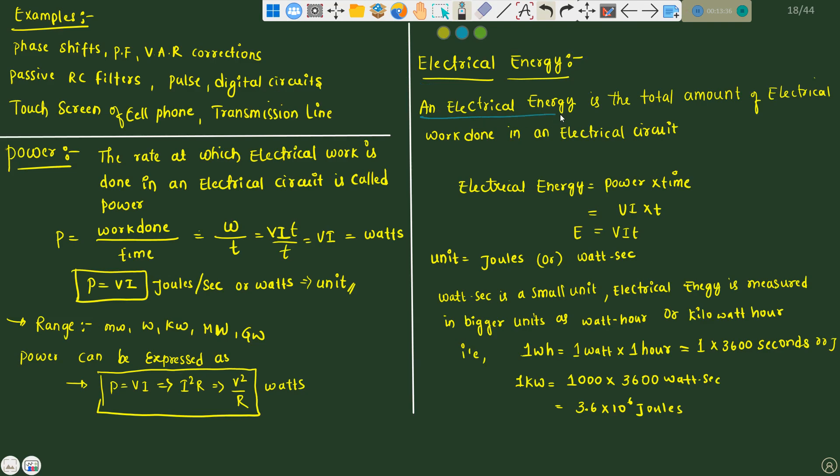If we talk about electrical energy, electrical energy is the total amount of electrical work done. See the difference between power and electrical energy. Here rate at which electrical work is done, here total amount of electrical work done in an electrical circuit is electrical energy, that is power into time. Unit is joules or watt second. We know that watt second is a smaller unit. In practical applications, electrical energy is measured in bigger units. In your home also, your meter reading or meter capacity in kilowatt hour like that. Watt hour or kilowatt hour. One watt hour is one watt into one hour. We need to convert this one hour into seconds, that is 3600 seconds. One kilowatt of energy is 1000 into 3600 watt, that is 3.6 into 10 raised to 6 joules.